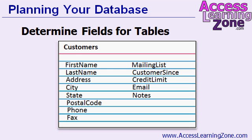You might notice when writing down my field names, I didn't put any spaces between 'first' and 'name.' Access databases work better if you don't use spaces in field names. When you start writing VB code, macros, and SQL statements, if you have field names and table names with spaces in them, things start to get really messy. So capitalize 'First' and 'Name' but put them together without a space. You'll see the same rule applies to MailingList, CustomerSince, CreditLimit, and PostalCode.